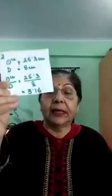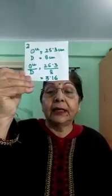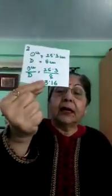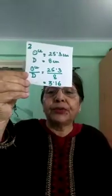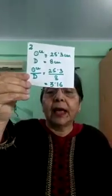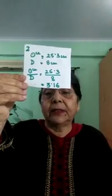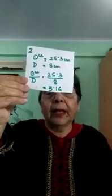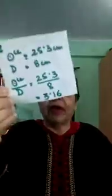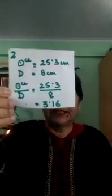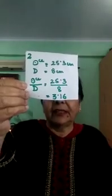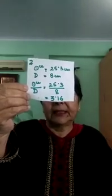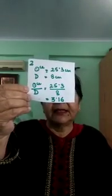I have done the same thing for the second circle — the green colored circle. For this circle, the circumference is 25.3 centimeters and the diameter is 8 centimeters. The ratio circumference to diameter is 25.3 upon 8. The centimeter units cancel, and on calculating, we get 3.16. There is no unit for this, as it is a ratio.